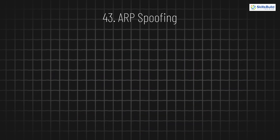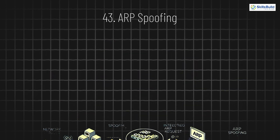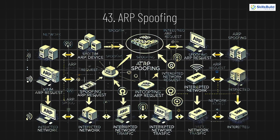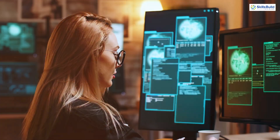43. ARP Spoofing. ARP Spoofing (Address Resolution Protocol Spoofing) tricks devices on a local network into thinking a hacker's device is another device, allowing them to intercept, monitor, or alter network traffic.